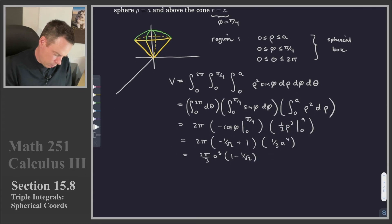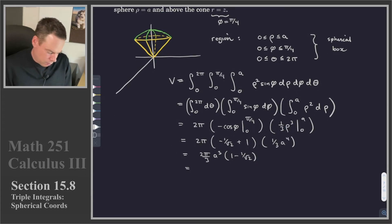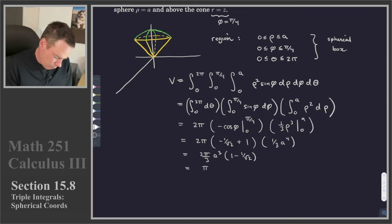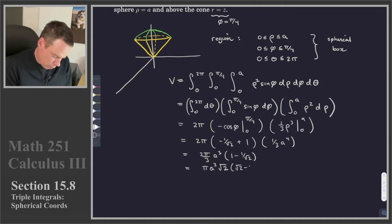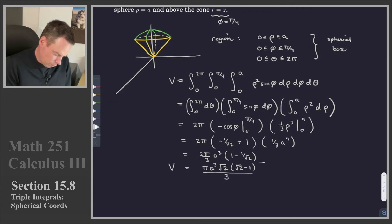This becomes (2π/3)a³ times (1 − 1/√2). We can clean that up: writing (1 − 1/√2) as (√2 − 1)/√2, the √2 in the denominator cancels with part of the 2 to leave just √2. So we can write the volume as π a³ √2(√2 − 1) all over 3.